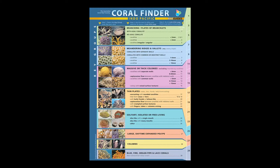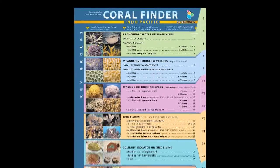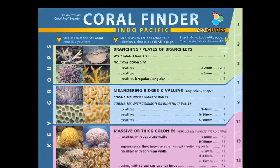Now that we know the basic anatomy of a coral, we need to know the anatomy of the Coral Finder itself. The front page is known as the key page. It classifies the world of hard corals by shape, form, texture, and life habit. The key page contains key groups, all of which are simple visual concepts.